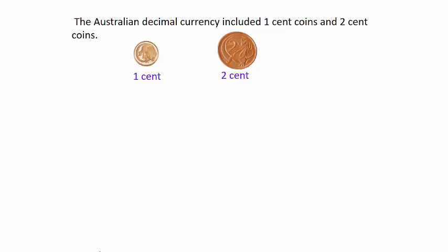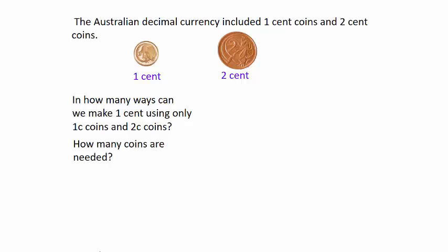For example, in how many ways can we make a total of 1 cent using only these two coins, and secondly how many coins are needed to achieve that? Obviously to achieve a total of 1 cent you must use just one coin, the 1 cent coin, and that means there's only one way of doing that and only one coin was used.